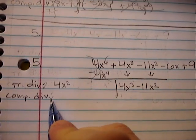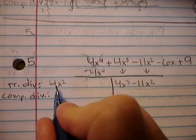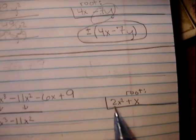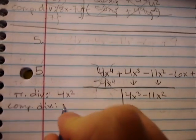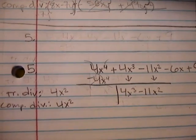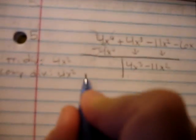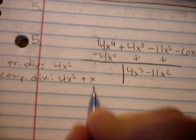Now we're moving on to finding the complete divisor. The complete divisor is twice the root already found. Twice this, 4x squared, plus the latest root you just found, x. That is our complete divisor.